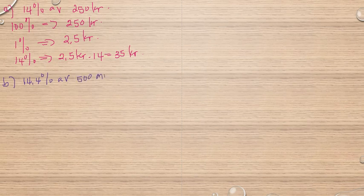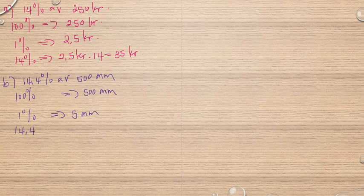Let's look at B. What does it say: 14.4% of 500 millimeters. So we have 100%, the whole, which corresponds to 500 millimeters. And 1% corresponds to 500 divided by 100, which is 5 millimeters. So to get 14.4%, we multiply 5 millimeters by 14.4. So we get 5 times 14.4, which is 72 millimeters.